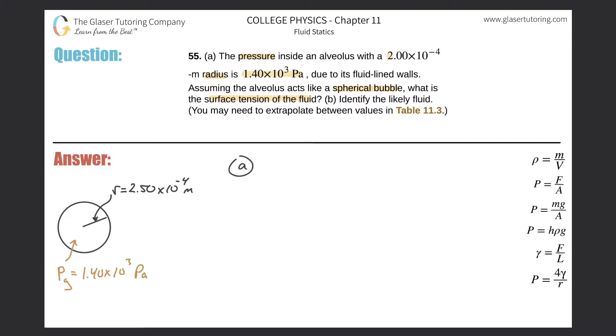All right, so for letter A, remember we have this formula down here. This relates the pressure to the surface tension and the radius of a spherical bubble. So this formula is specific for a spherical bubble in terms of relating the pressure to the surface tension via the radius. So I'm going to write that formula down. We have the pressure is equal to 4 multiplied by gamma, which is the surface tension, all divided by R.